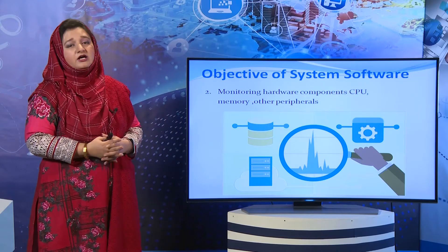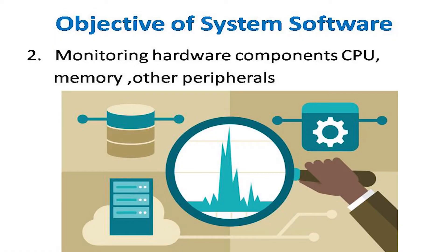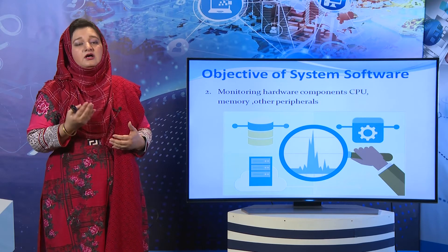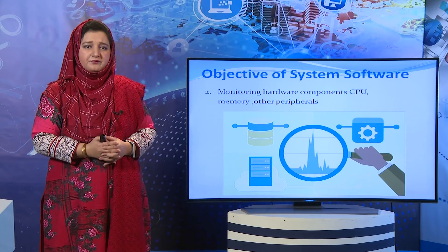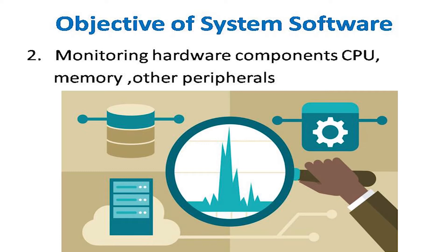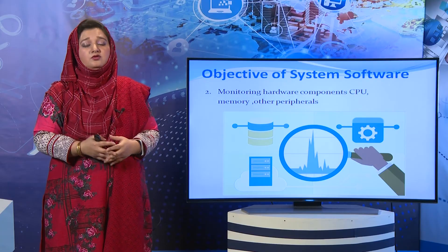System software کا دوسرا objective ہے to monitor the hardware components — جیسے CPU، memory یا peripheral devices. یہ نہ صرف انہیں monitor کرتا ہے بلکہ ان کی performance analyze بھی کرتا ہے. مثلاً اگر computer heat ہو جائے تو operating system آپ کو alarm generate کرتا ہے کہ CPU heat up ہو گیا ہے so things can be done to cool it down. اسی طرح اگر memory بہت زیادہ consume ہو اور space کم رہ جائے تو alerts دیتا رہتا ہے اور clean up procedures بھی execute کرتا ہے۔